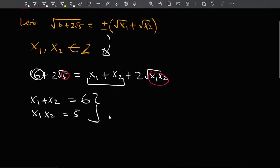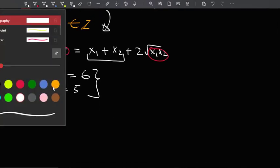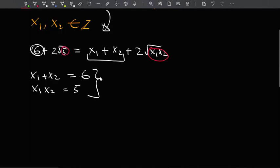I'll just scroll up to get more space here. Okay, let me also change the color so that you can still follow this up. So from this first equation, you can see that x1 is obviously 6 minus x2. Let's plug that here. So you have x2 into x1, which is 6 minus x2, equals 5.